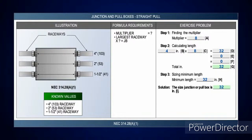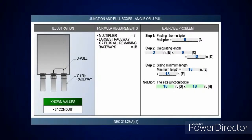For multiple raceways on a straight pull, it's the same calculation. Take the largest conduit — in this case a 4-inch — multiply by 8, gives you 32 inches. All the rest are zeros; you don't even add anything. So the minimum length across has to be at least 32 inches. For an angle or U-pull with the multiplier 6: a single 3-inch raceway means that box has to be 18 inches by 18 inches.